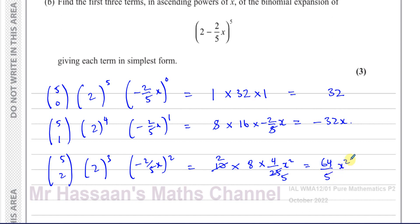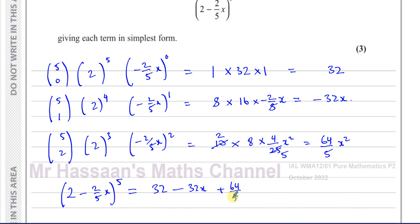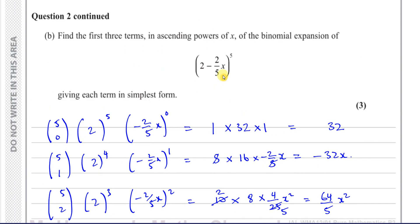So our first three terms give us: 2 minus 2 fifths x, all raised to the power 5, equals 32 minus 32x plus 64 over 5 times x squared. Of course there are more terms, but those are the first three terms of this expansion.